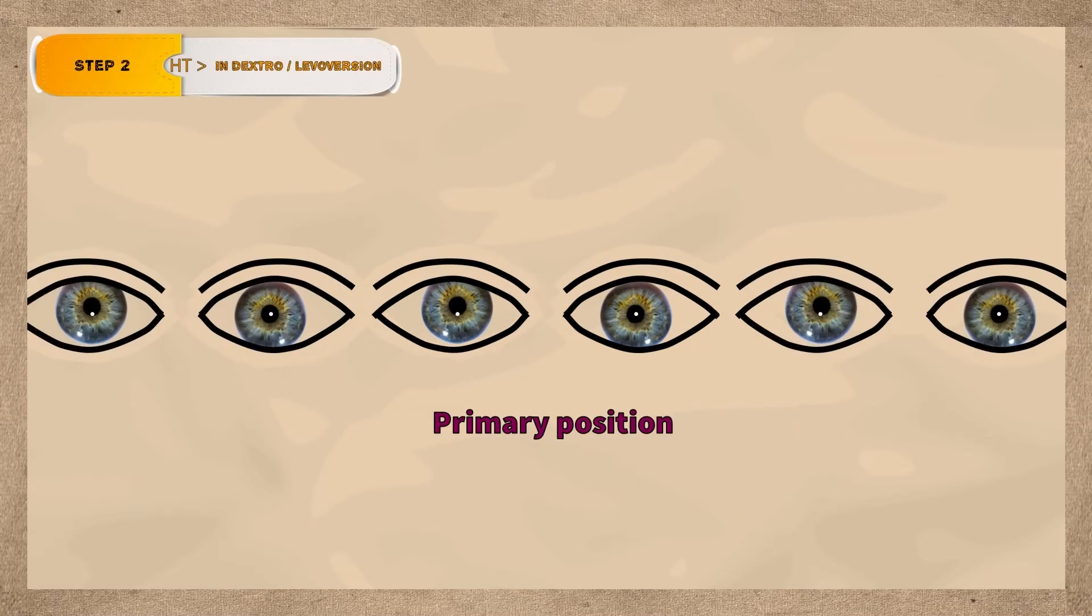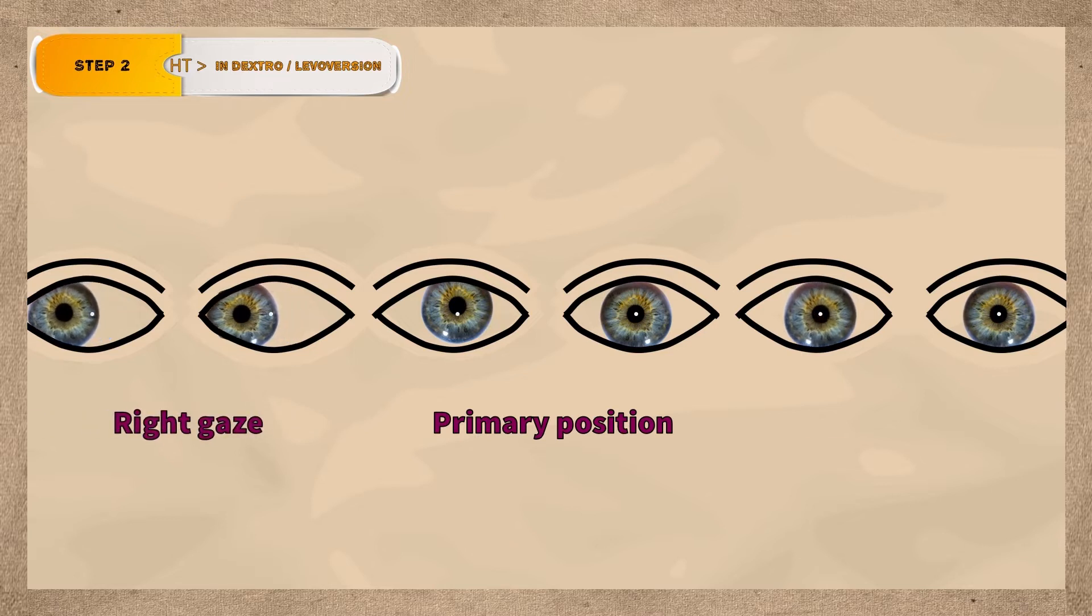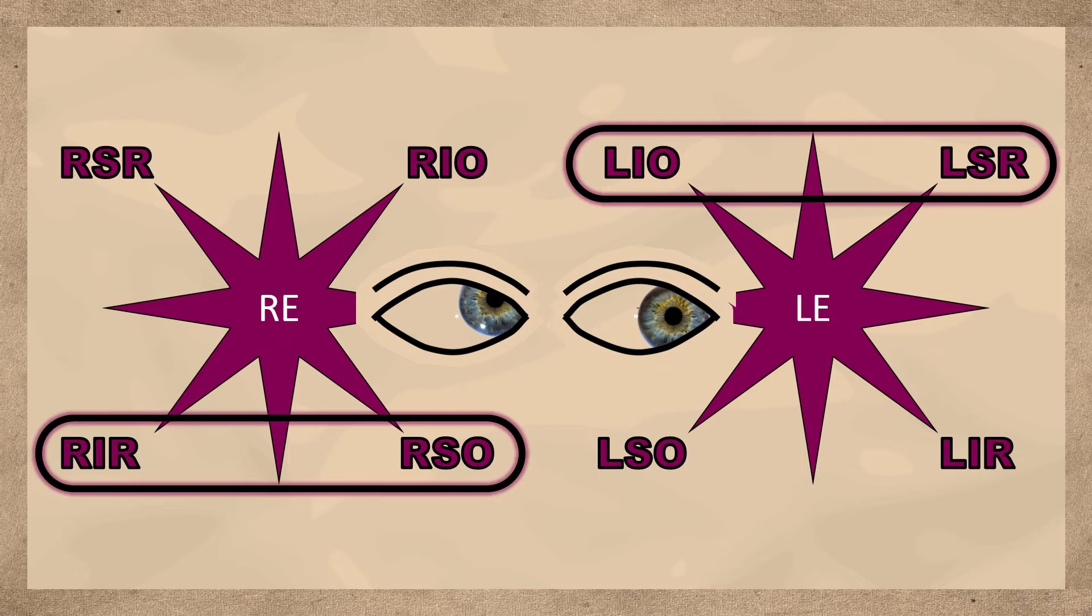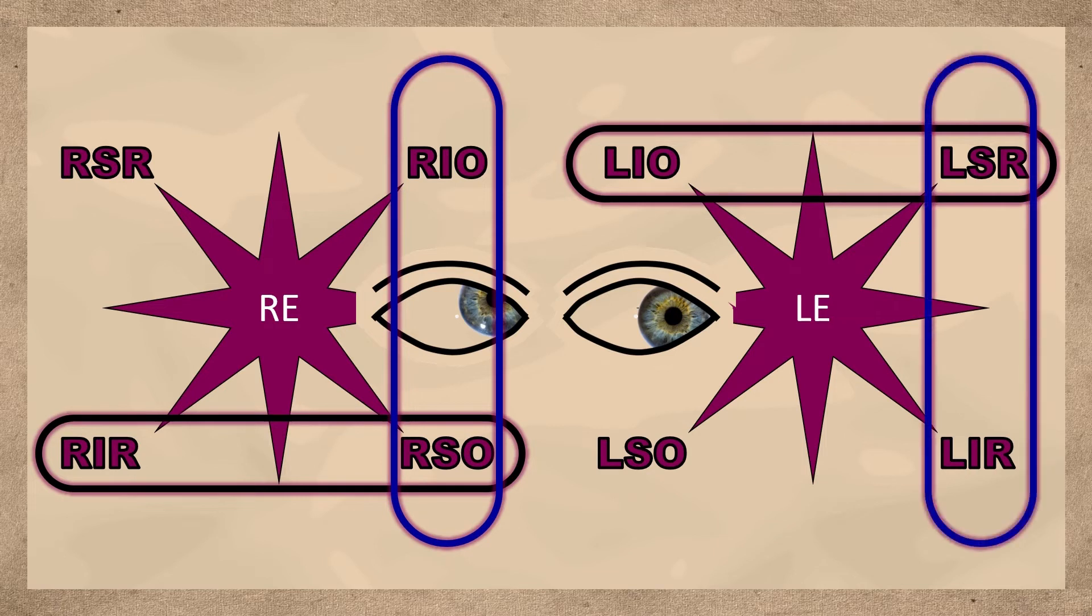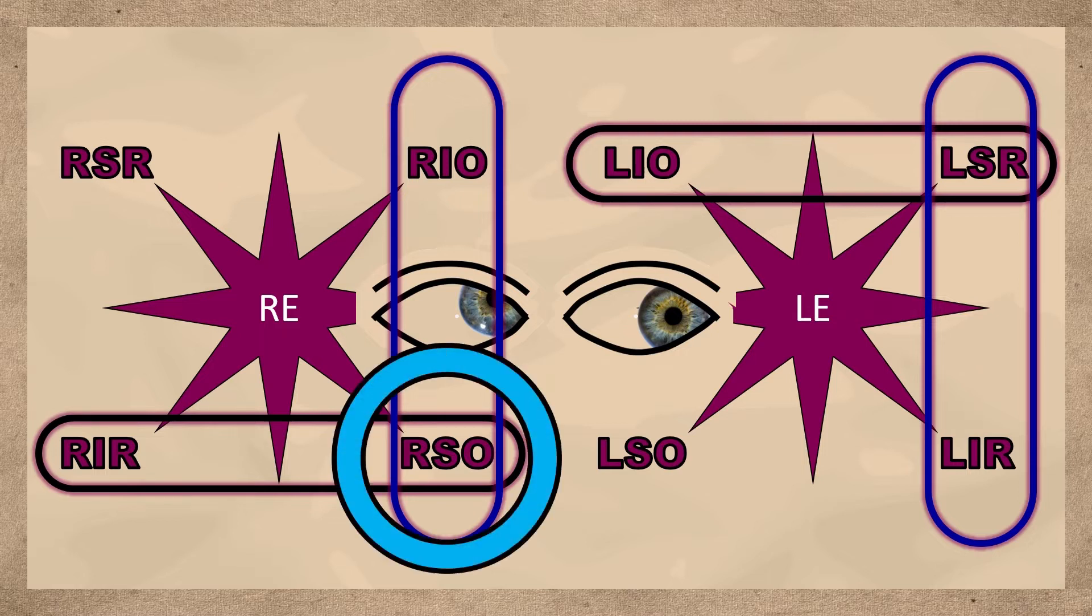Step 2 is to determine whether the vertical deviation is greater in right or left gaze. So here we see that the vertical deviation is less in right gaze and greater in left gaze. So there is weakness of one of the muscles acting in left gaze. This would be either the obliques of the right eye or the recti of the left eye. So in this case we have further narrowed down the possible culprit to one of two muscles, the right superior oblique and the left superior rectus.